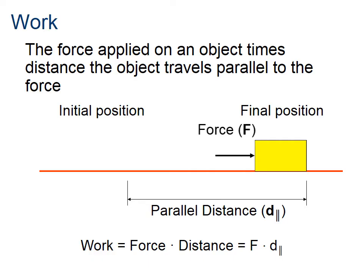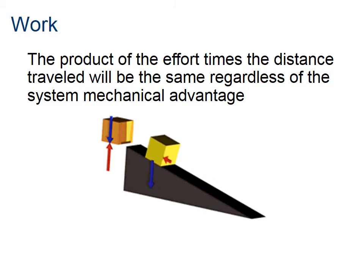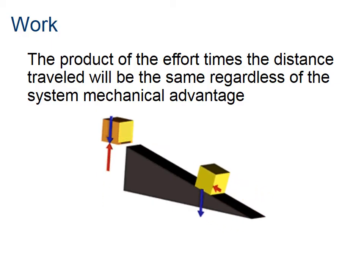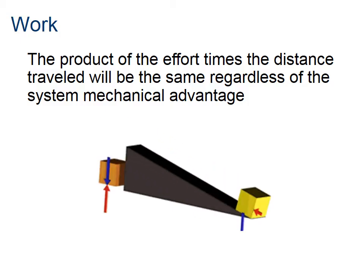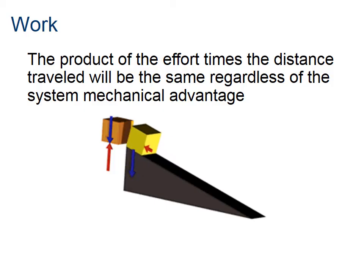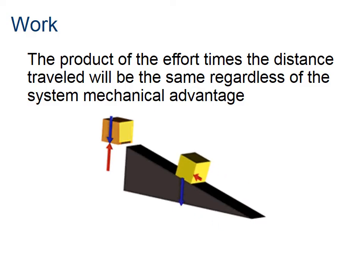If we're talking U.S. customary units, a force would typically be pounds and a distance might be inches or feet, so we would say inch-pounds or foot-pounds. Going back to the ramp with the boxes, the work done in each case is the same — force times distance. It doesn't matter what kind of machine you use, you're still doing the same amount of work.